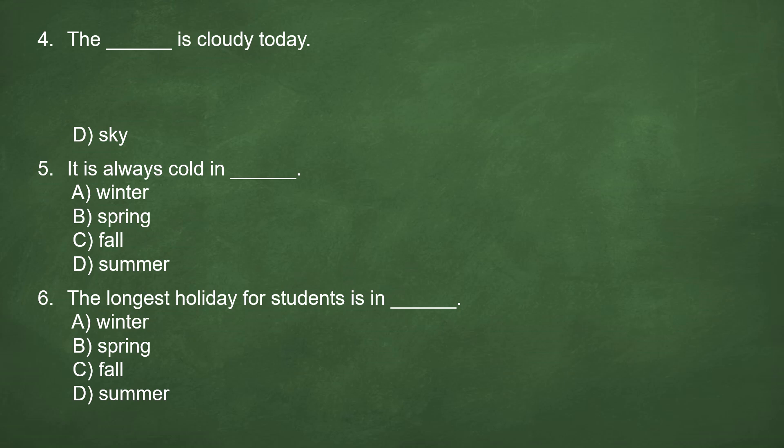Number 5. It is always cold in blank. A. Winter. B. Spring. C. Fall. D. Summer. Answer: A. Winter.